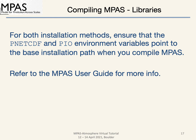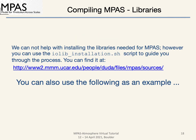When you install all the libraries, you will need to set the pnetcdf and PIO environment variables to point to the installation directory of each library. These variables show MPAS where the libraries have been installed. We are not able to offer support for installing these libraries, as we only support MPAS. However, the iolib installation script is very helpful for installing these libraries and is a great example. It's best to use the script as a guide rather than running it in its entirety. You can find the iolib installation script at the link on screen, along with tar files of each library.